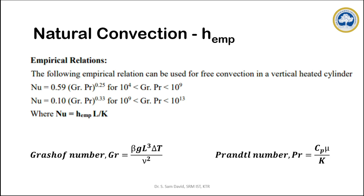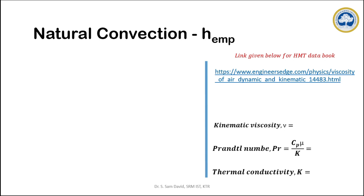The third objective is to calculate the empirical heat transfer coefficient. The empirical relation for free convection on a vertical cylinder is used here. To identify the suitable equation for the present experimental conditions, we calculate the product of the Grashof number and Prandtl number. The Grashof number and Prandtl number are given by specific formulas, and we need air properties such as specific heat capacity, thermal conductivity, density, and viscosity at the film temperature. The data sheet for these properties is provided in this video.